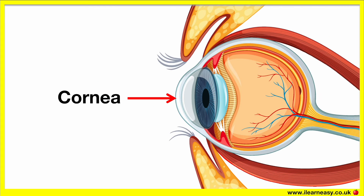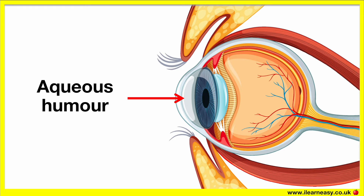The cornea is the clear front surface of the eye. It acts as a window that allows light to get into the eye. The cornea bends the light before it enters the eye. The light entering passes through a watery substance called the aqueous humour, which fills the area behind the cornea.